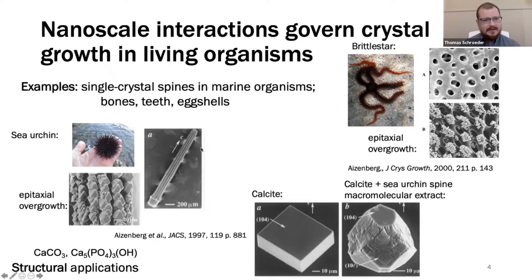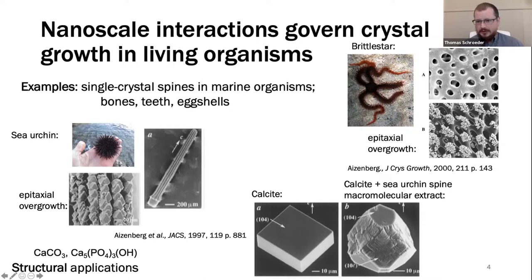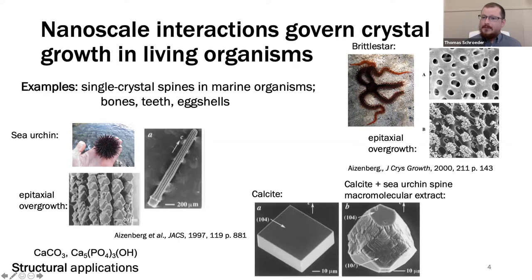There's a technique called epitaxial overgrowth which demonstrates that these are single crystalline structures very well. You take such a structure and put it in a supersaturated calcium carbonate solution so that more material grows onto it, and they all grow with the same orientation — a strong demonstration that these are single crystalline structures. The question is how this happens. Truthfully we don't know fully, but what we do know is that macromolecules in solution play a role in locally controlling the growth of these crystalline structures.